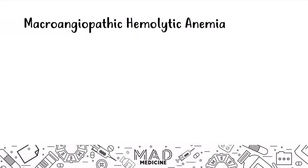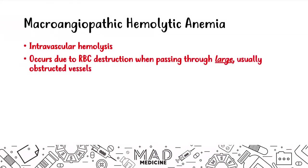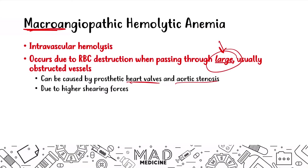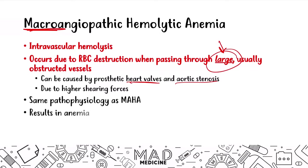Macroangiopathic hemolytic anemia is also intravascular hemolysis, but the destruction occurs in large, usually obstructed vessels — as opposed to small vessels in microangiopathic HA. It is associated with prosthetic heart valves and aortic stenosis — those are the two main high-yield associations. It can also result from higher shearing forces in the bloodstream. The same pathophysiology applies, resulting in anemia due to red blood cell lysis.